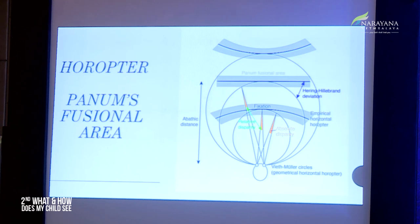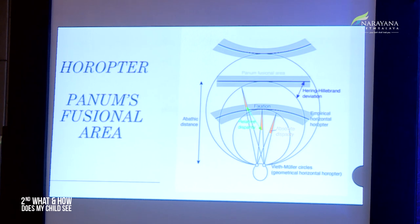Theoretically, anything in front of the horopter and anything beyond the horopter should give rise to double vision. But this does not happen in practice because of something called Panum's fusion area. This allows a certain area in front of and behind the horopter where we are still able to fuse with no double vision occurring — that is called Panum's fusion area.